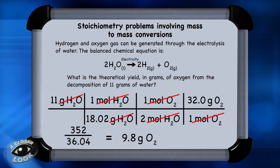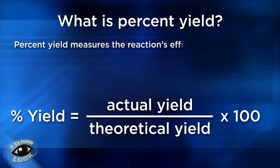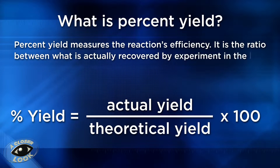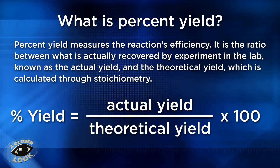This amount is known as the theoretical yield because, on paper, based on the stoichiometry, it is the maximum amount of product that can be produced. Percent yield, on the other hand, is a calculation that measures the reaction's efficiency. It is the ratio between what is actually recovered by experiment in the lab — the actual yield — and the theoretical yield, which is calculated through stoichiometry. To get the percent yield, we take the ratio of the actual to the theoretical yield and multiply by 100 to convert it to a percentage.